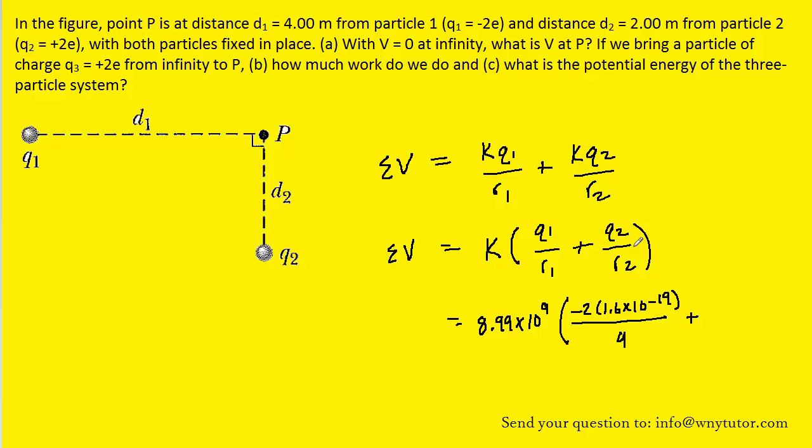For charge Q2, we were told that it has a value of positive 2E, so we'll have positive 2 multiplied by the elementary charge, and then we're going to divide by the distance from charge 2 to point P. That distance was indicated to be D2, and that was stated as 2 meters. So we can pick up our calculators and type this all in. And we should get approximately 7.19 times 10 to the minus 10. And the standard unit of electric potential is volts, so this would be the correct answer to part A.